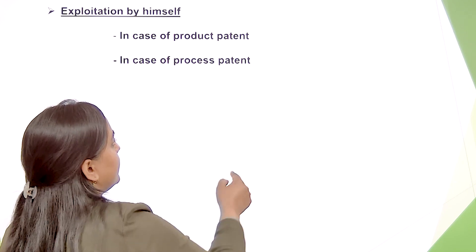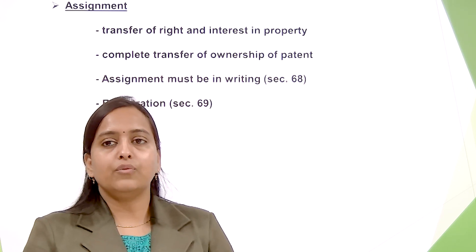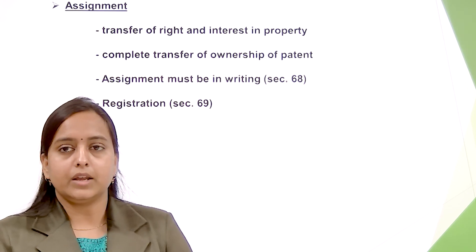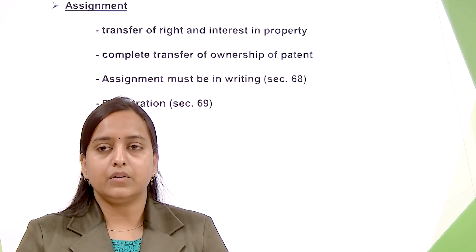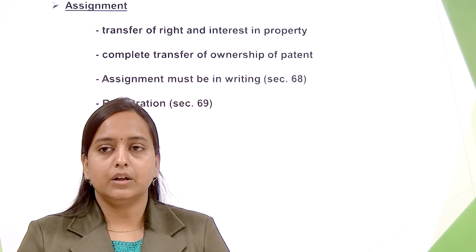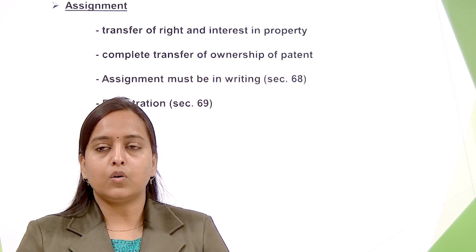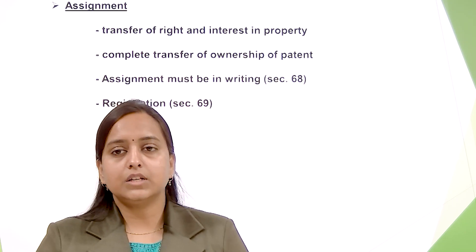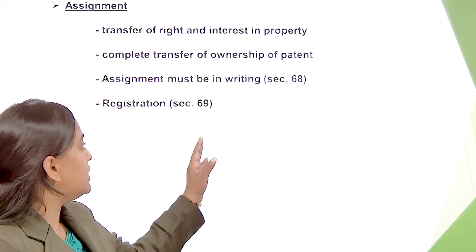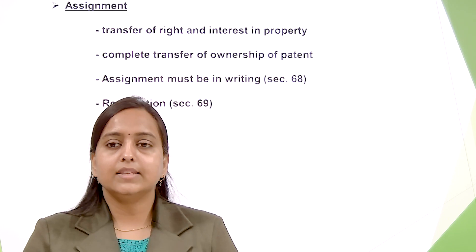If the person does not want to exploit the invention himself, he may make an assignment of his right. Assignment is a transfer of right and interest in the property. Assignment of patent involves the complete transfer of ownership of the patented invention by virtue of contract. As per Section 68 of the Indian Patent Act, assignment must be in writing in a document containing all the terms and conditions governing the rights and obligations of the parties. As per Section 69 of the Indian Patent Act 1970, assignment must be duly registered by the controller, through which the assignee becomes entitled to commercially exploit the invention.